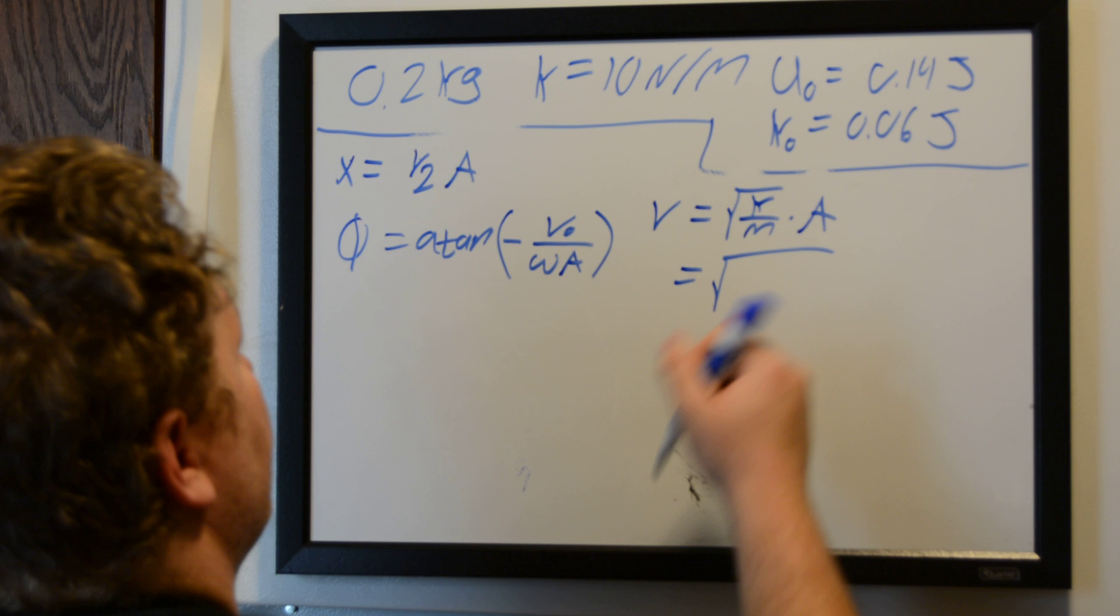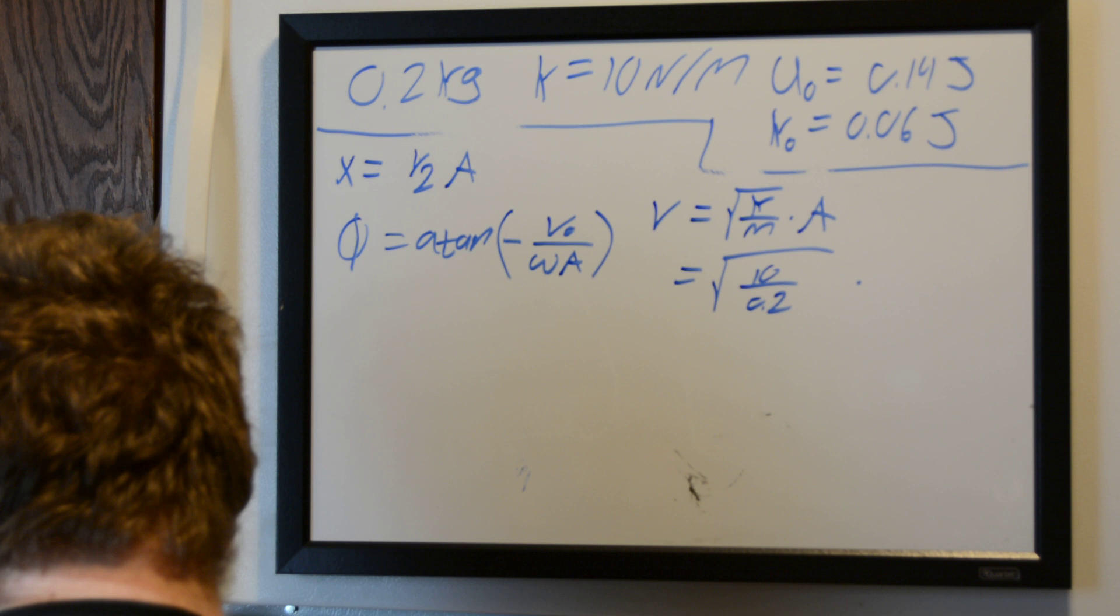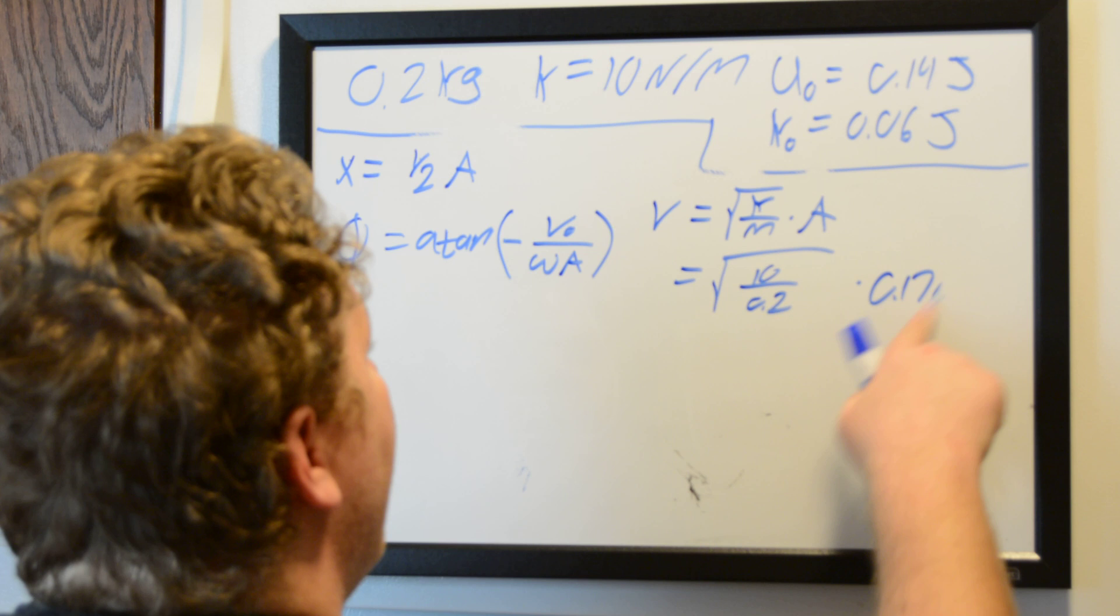So we do know all of these variables now. So we can just plug in 10 newton meters over 0.2 kilograms times our amplitude, which was 0.17 meters, 0.17 meters.